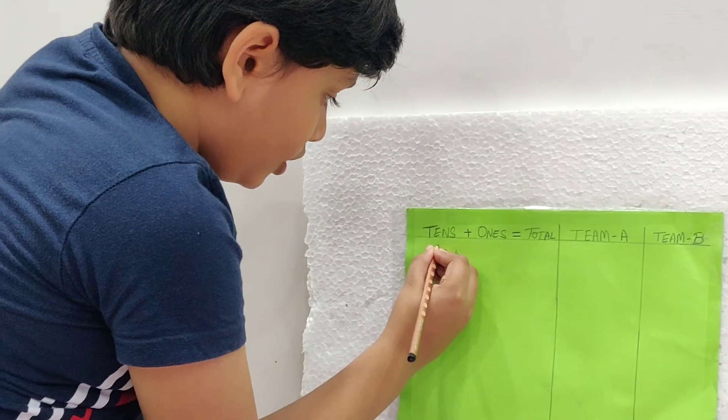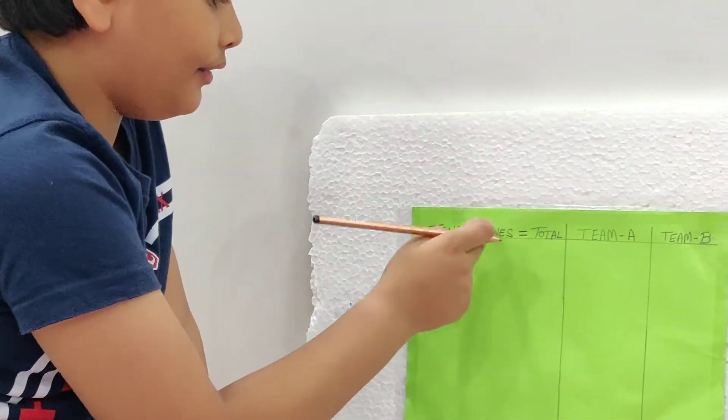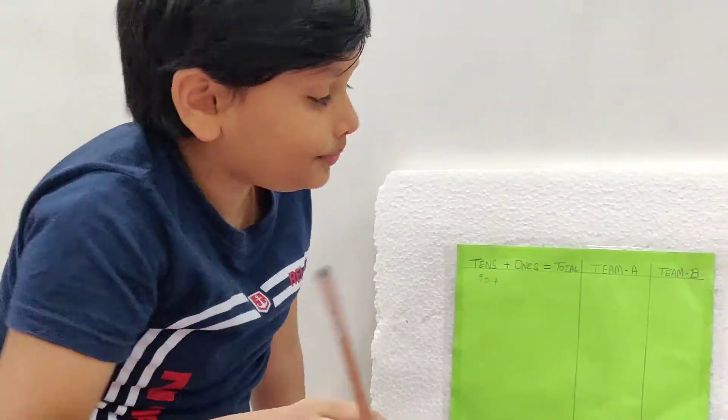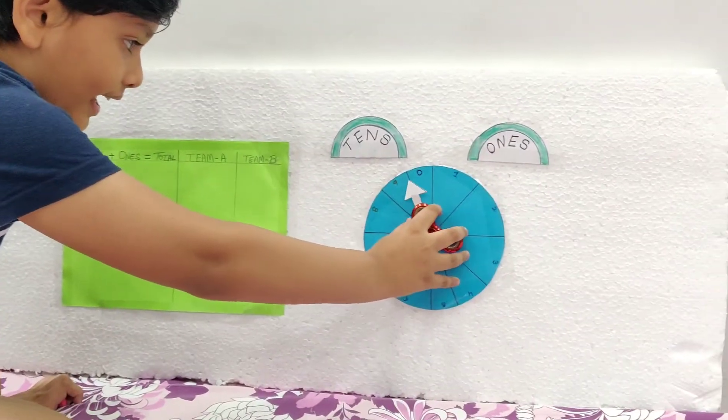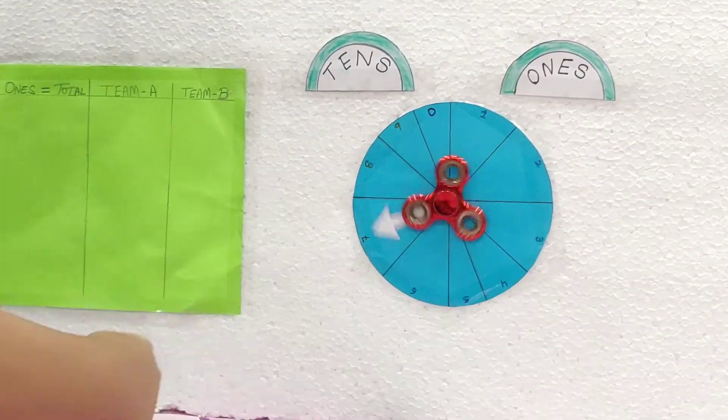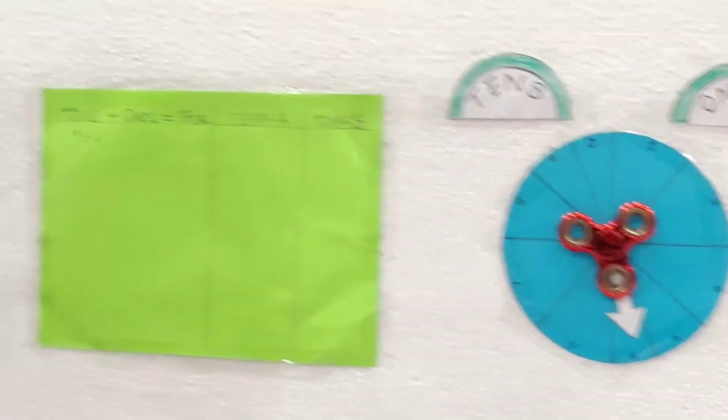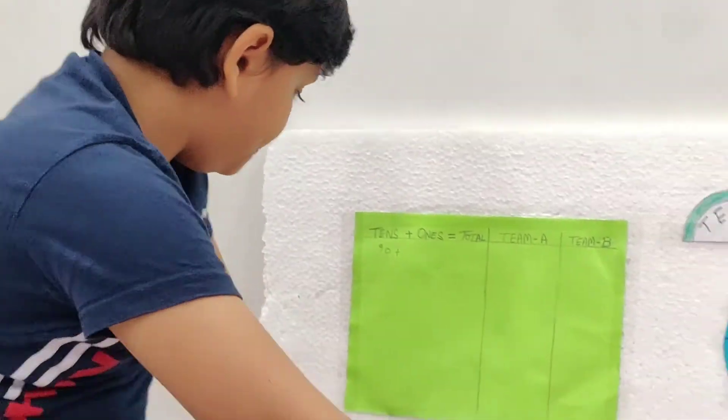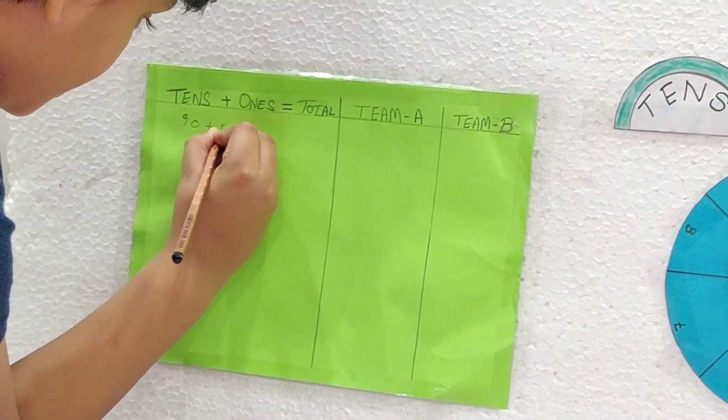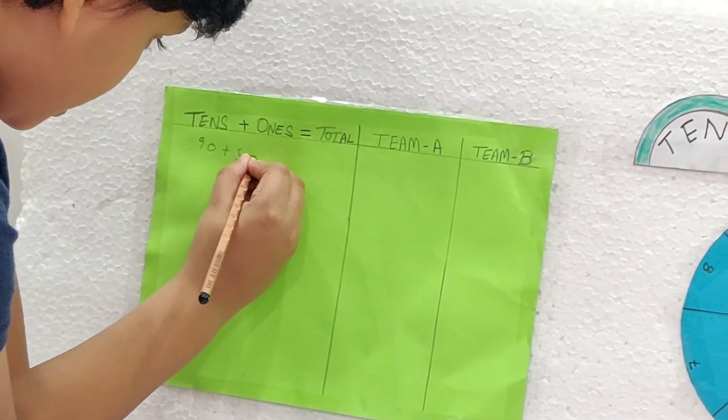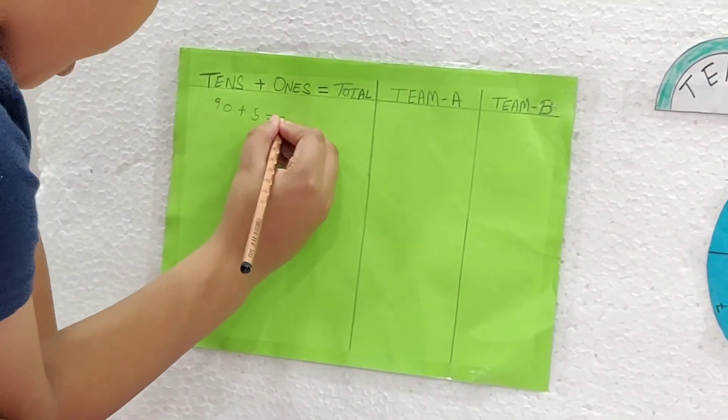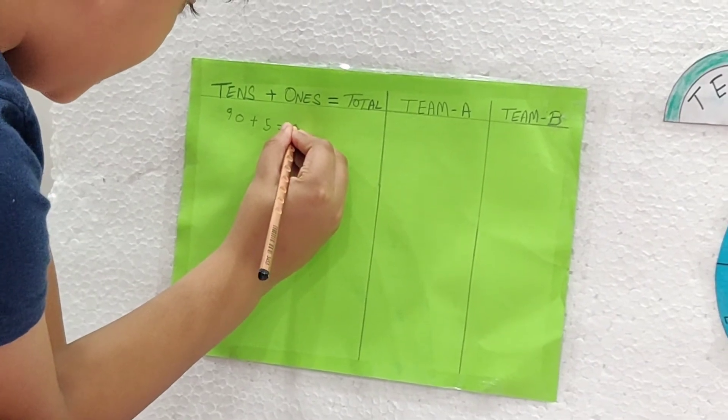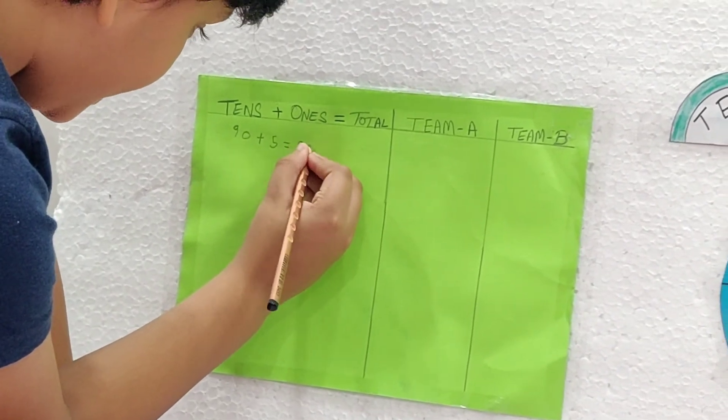And we will do the plus sign also because we have to do the one side also. Now again we will spin the wheel. This time it is 5. So it will be 5 only.